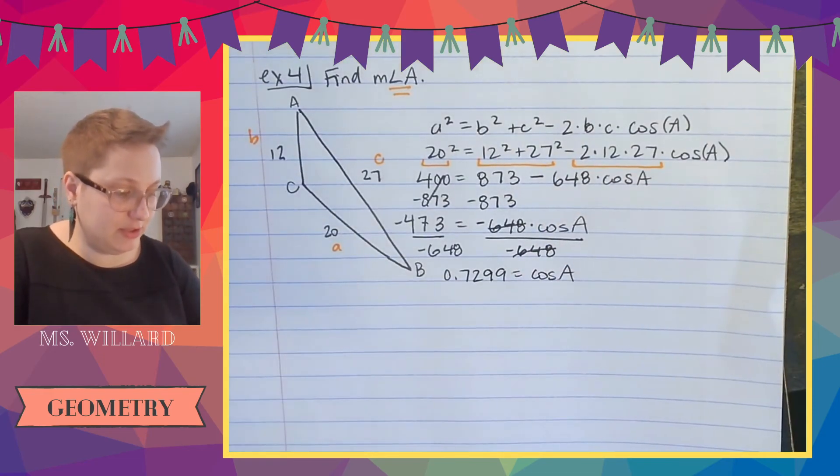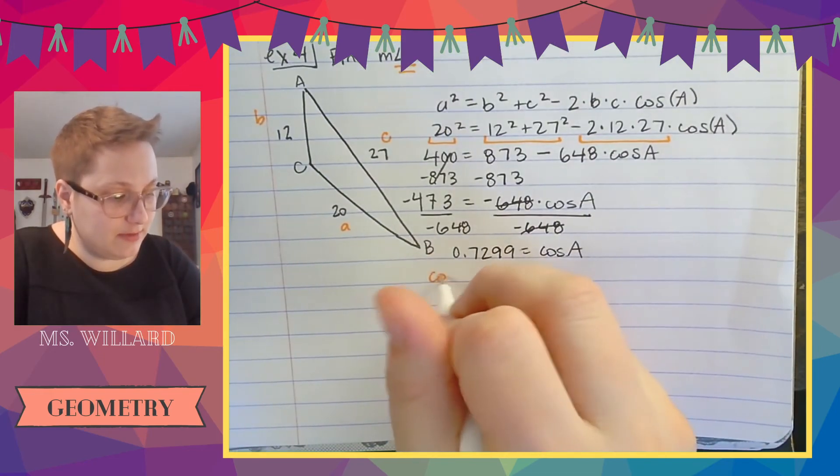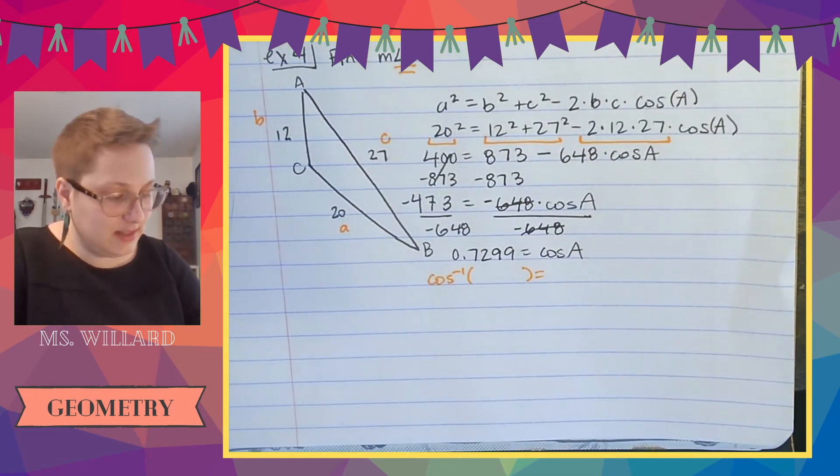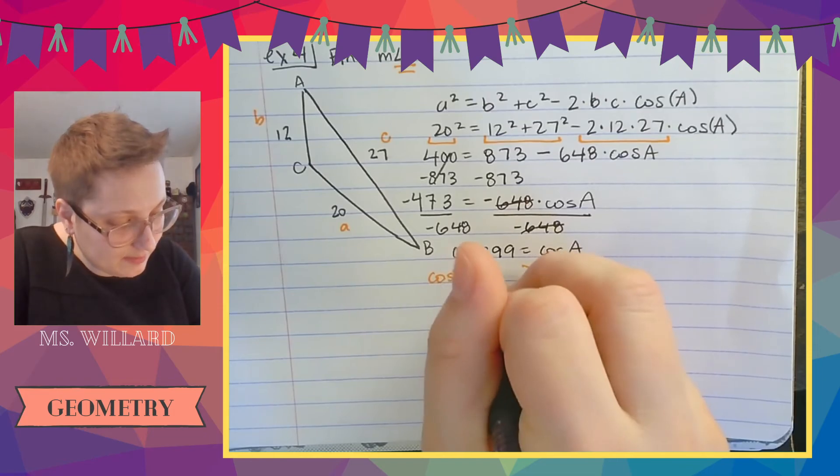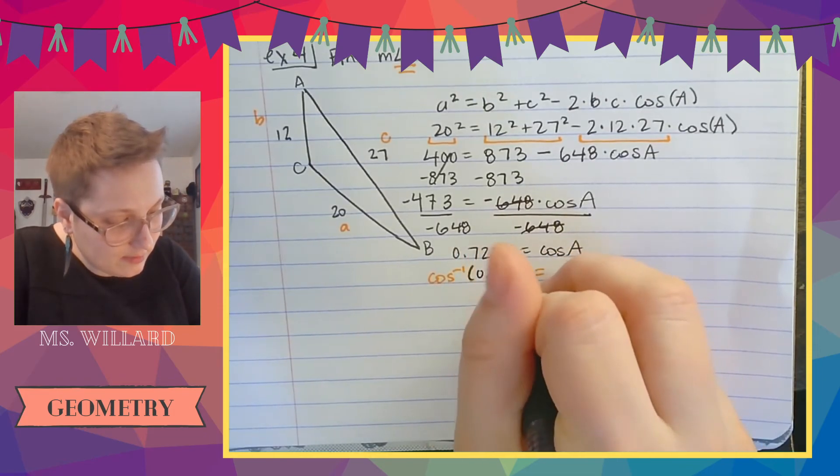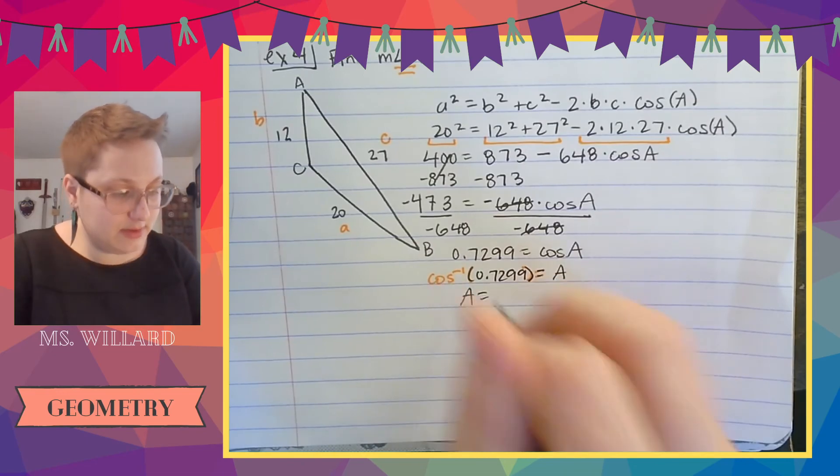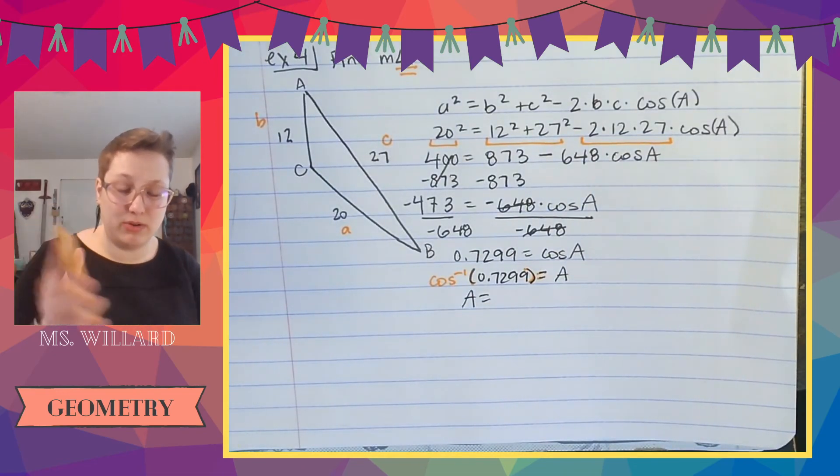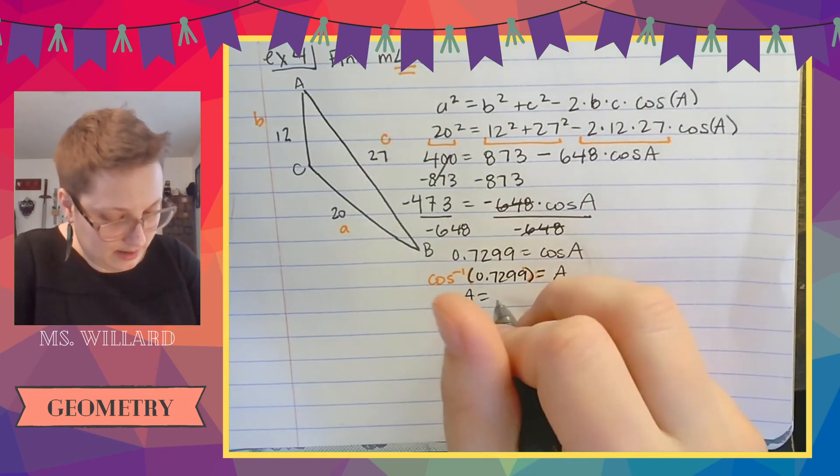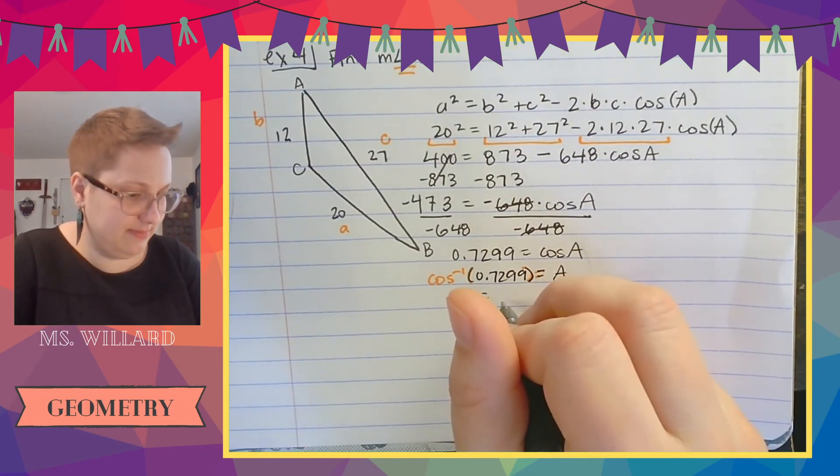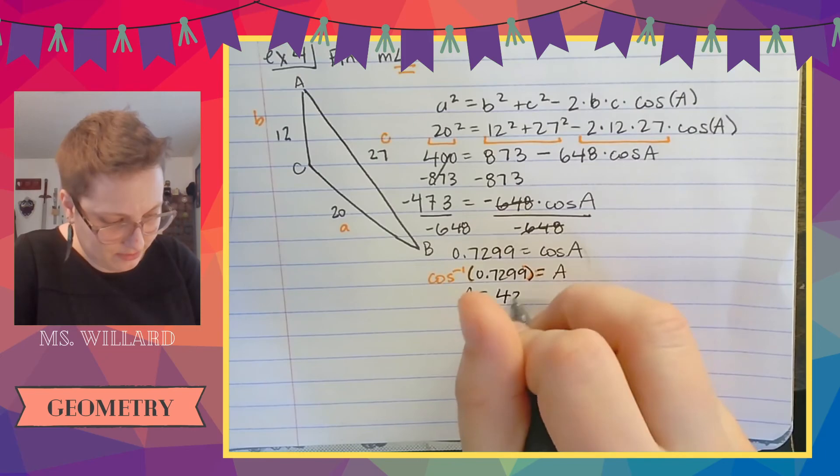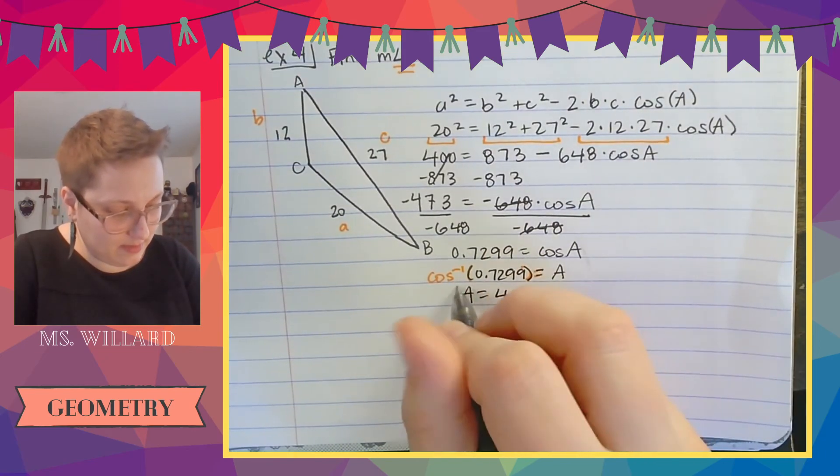0.7299 equals cosine of A. So then I'm just going to do cosine inverse because that's how we find the angle measure. And then A equals cosine inverse of this really gross number. I'm going to leave this whole thing in my calculator. And I get 43.1 degrees. We did it.